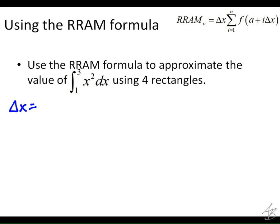b minus a is going to be 3 minus 1, right, divided by n. What's n going to be? 4. So delta x is going to be 1 half.